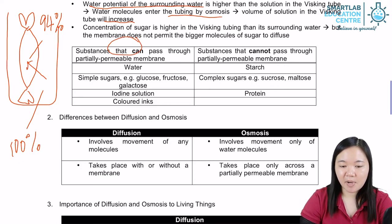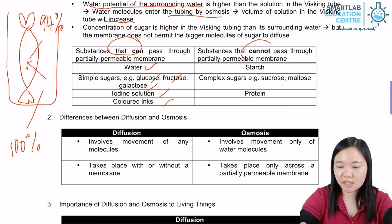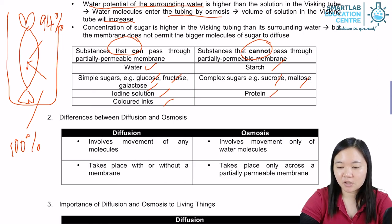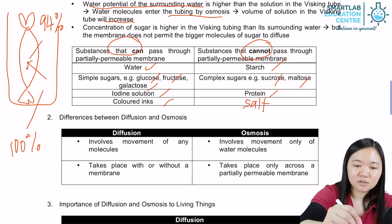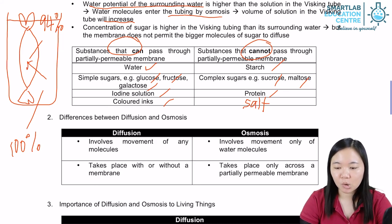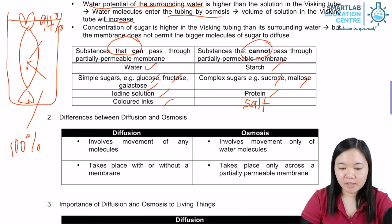Substances that can pass through a partially permeable membrane: water, simple sugars such as glucose, fructose, and galactose, iodine, and colored ink. Substances that cannot pass through: starch, sucrose, maltose, protein, and salt. You have to know that salt cannot pass through a partially permeable membrane — it will effectively set up an osmotic gradient.